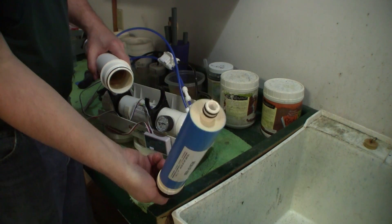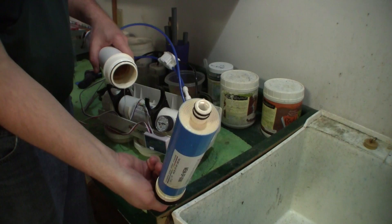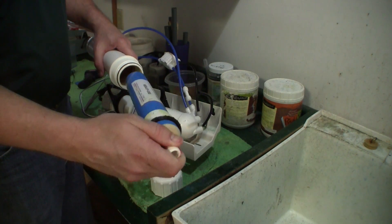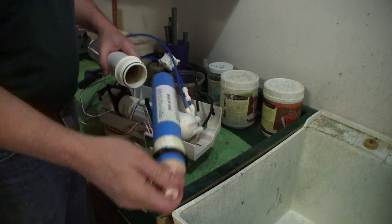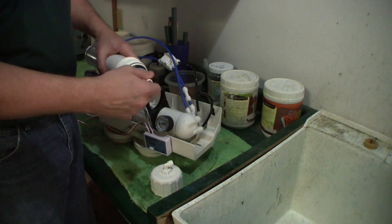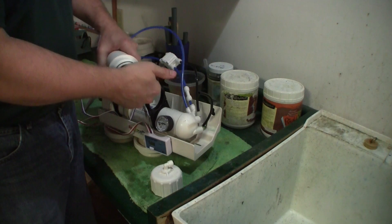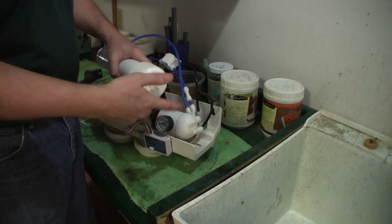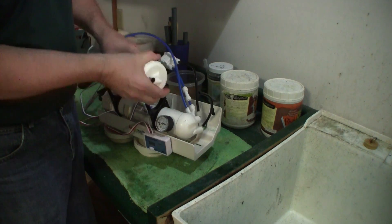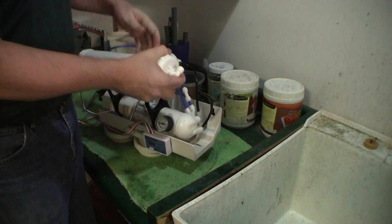One end of the membrane has got these little gaskets on it. That is the end that goes all the way into the back end of the chamber. So you take your new membrane, you shove it in there, make sure it's seated. And screw the cap back on.